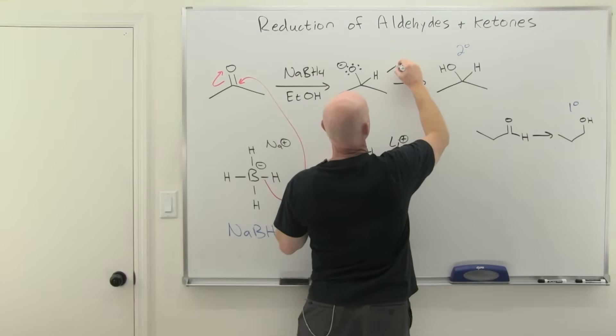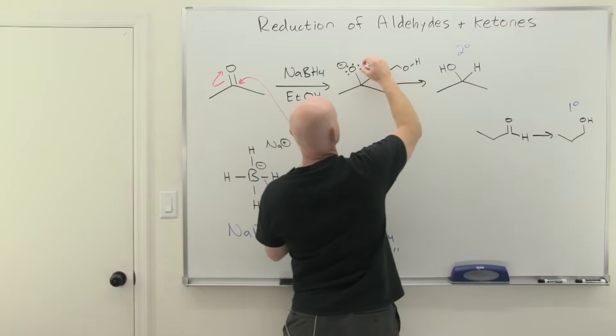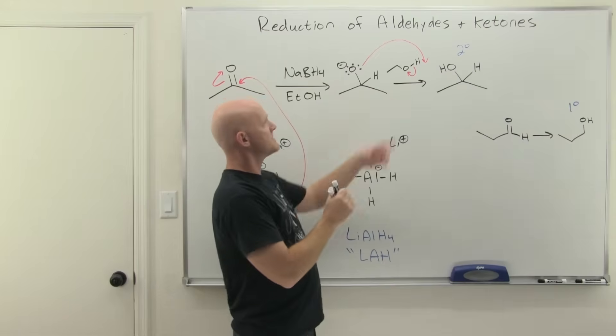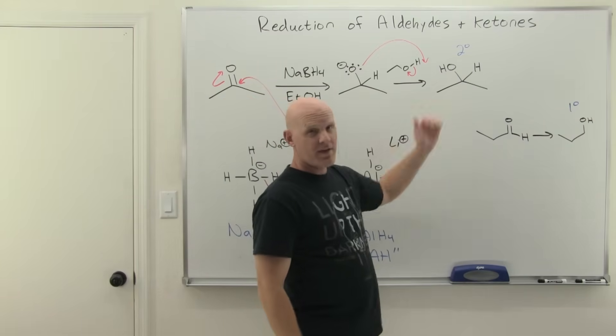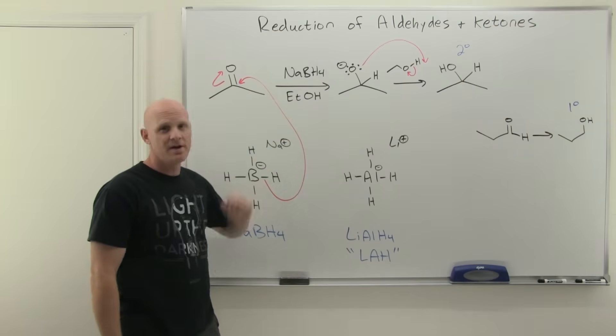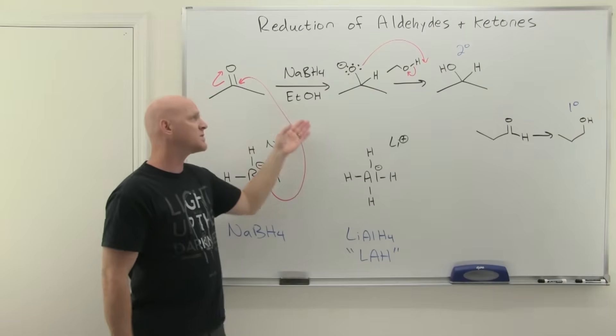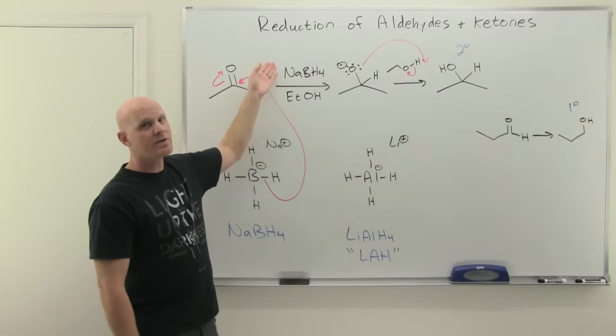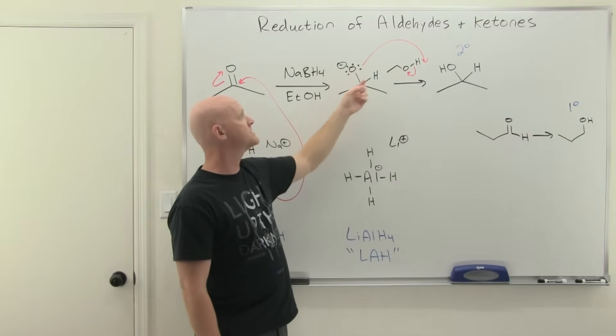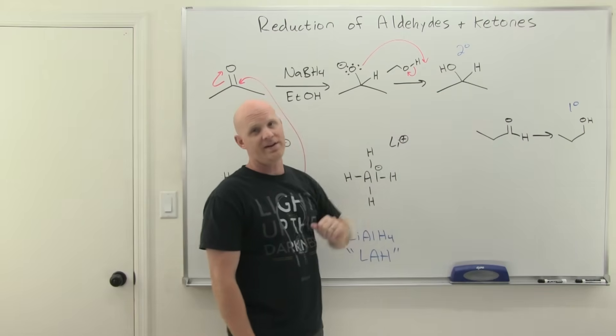Ethanol can be used as the proton source for protonating the alkoxide ion. That's where we get that proton in step two, and we'd form the ethoxide ion as well. In principle, you could do step one NaBH4, step two H3O+, but much more commonly you'll see it done in a protic solvent, most notably ethanol. That way ethanol can protonate your alkoxide to get your alcohol product.